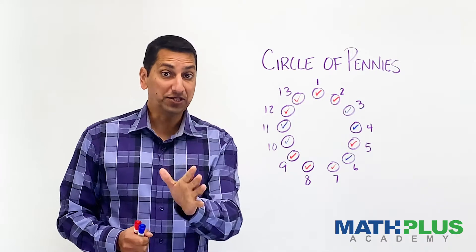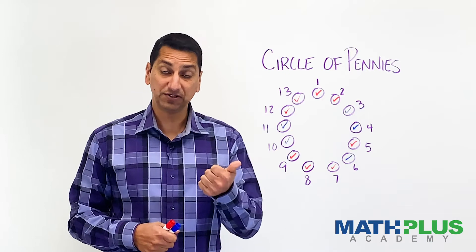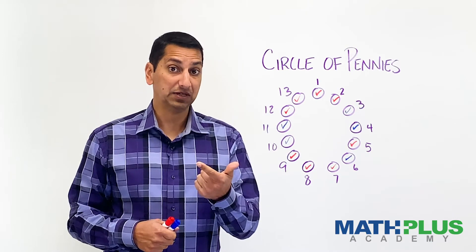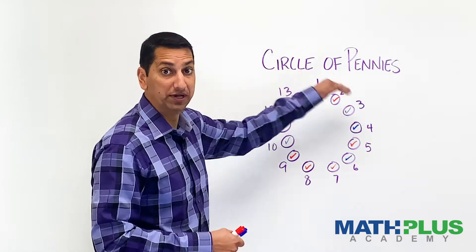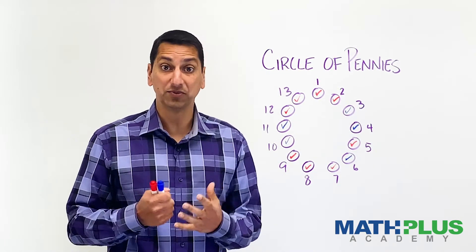And the question is, is there an optimal strategy? Would you want to be the person who goes first? The person who goes second? Will it depend on the number of coins in the circle? Who goes first or second? Is there a strategy by which you can always win?